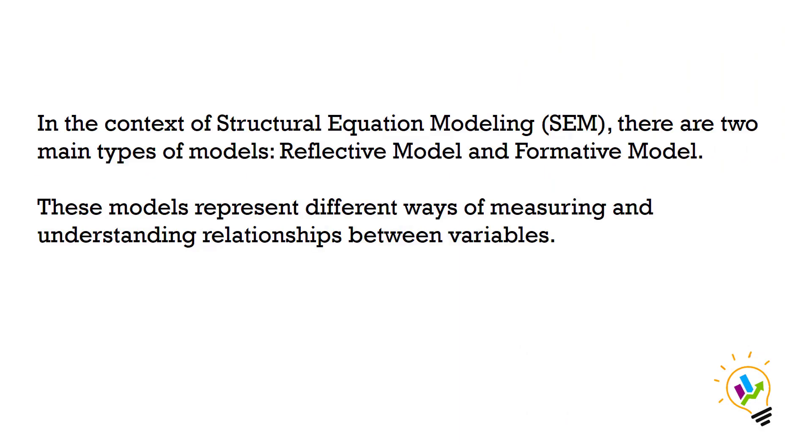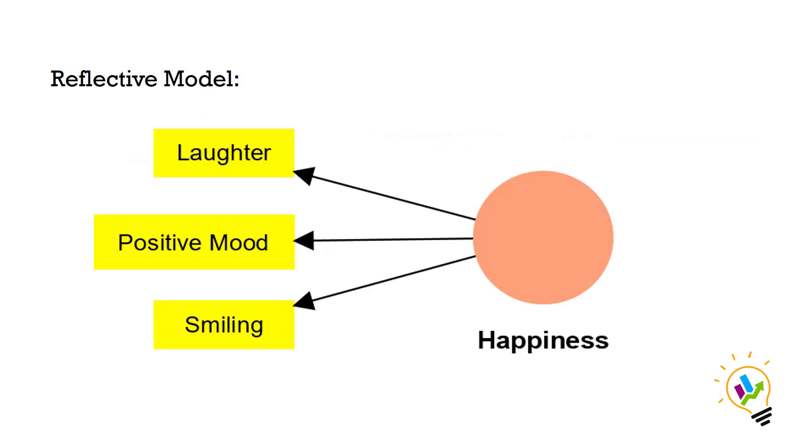In the context of Structural Equation Modeling (SEM), there are two main types of models: Reflective Model and Formative Model. These models represent different ways of measuring and understanding relationships between variables. First, we will discuss reflective model.